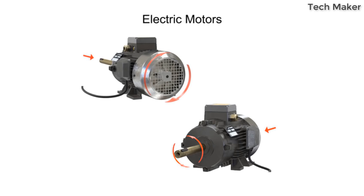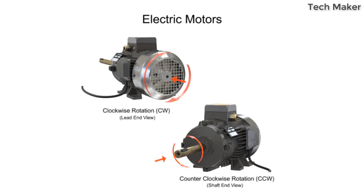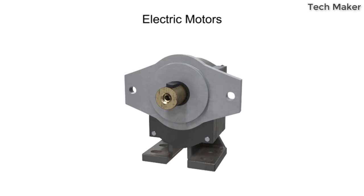In general, for most electric motors, rotation is specified as clockwise or counterclockwise when viewed from the opposite end of the shaft. This is sometimes called the lead end since the electrical wires or leads typically connect on this end. By contrast, the rotational direction for hydraulic pumps is specified as clockwise or counterclockwise rotation when viewed from the shaft end.